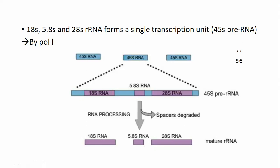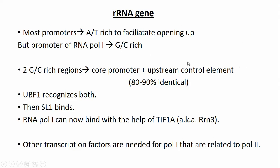Most promoters in general are AT-rich to facilitate the opening of the DNA, because AT base pairs have only two hydrogen bonds. However, the promoter of RNA Polymerase I is GC-rich. There are two GC-rich regions: the core promoter and the upstream control element, which are almost 80-90% identical in sequence.